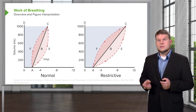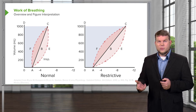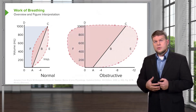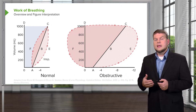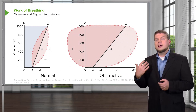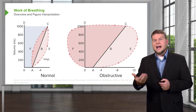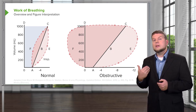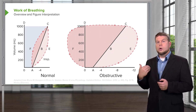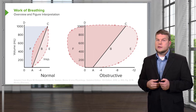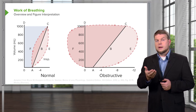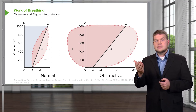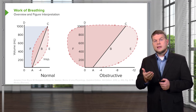Obstructive disorders also have a problem with work of breathing. For this, it really just inflates the graph because they have a problem getting a lot of their air out. They're overcoming a lot of resistance, so they have to push air out of the lungs. That can be seen in the diagram where the path goes A, E, C, D, F, back to zero, and then A.